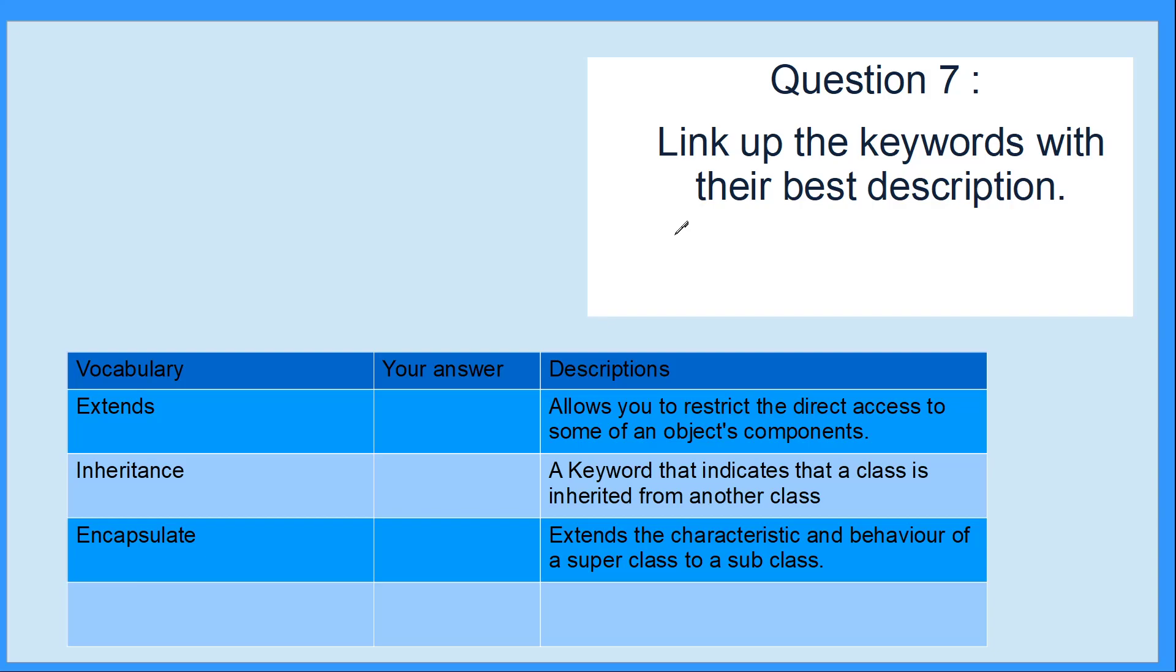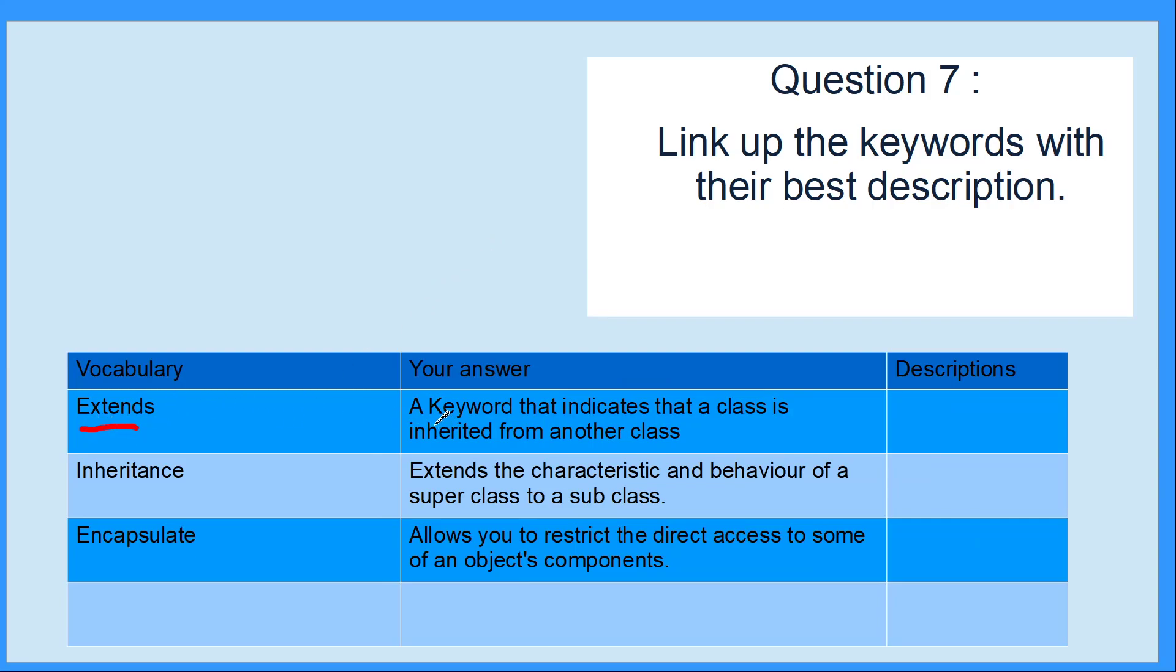This is another theory based question. You have to link these important keywords to the best description. Extends - the most important thing is it's a keyword that indicates this is a class that is inheriting properties or behavior from another class. Inheritance is the term for when we extend characteristics or behavior from a super class to a sub class. Encapsulate or encapsulation is when we restrict access to some of the object's components. When we're using private or protected, we're protecting our information or the properties of that class from outside access.